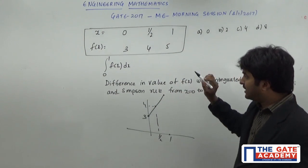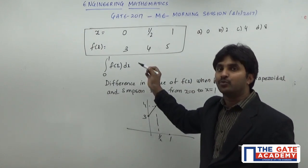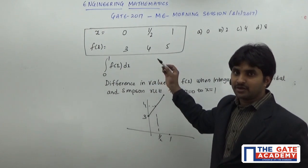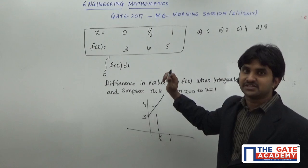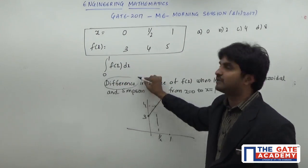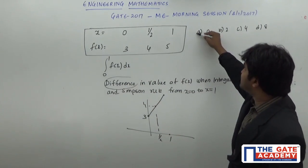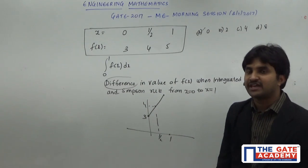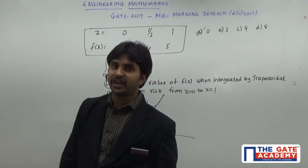So it means that when the value that you are going to get in both the cases, in both the formulas of trapezoidal and Simpson's is going to be the same, it means that the answer is going to be the same. The difference between both the answers will be equal to 0. I can directly answer it as option A. So the answer for this particular question is option A.